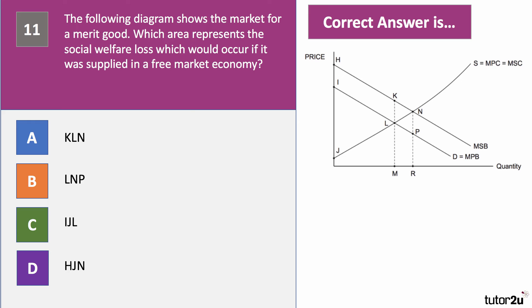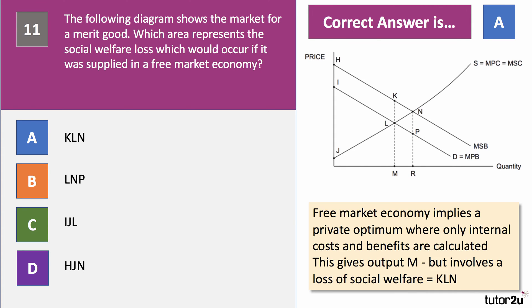Question eleven. The diagram shows the market for a merit good. Which area represents the social welfare loss which would occur if it were supplied in a free market economy — one without any government intervention? The free market private optimum is output M, whereas we'd like to be at output R, so there's under-consumption and market failure. The welfare loss is KLM. The answer is A. A free market implies a private optimum where only internal costs and benefits are calculated at output M, but there's a welfare loss of KLM because there's a social benefit lying above the private social cost at that point.